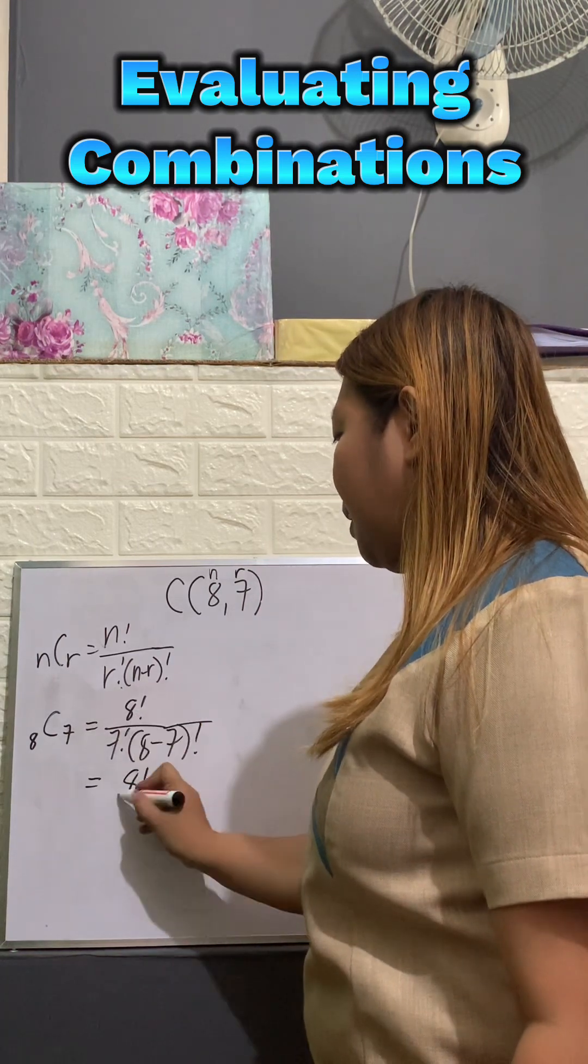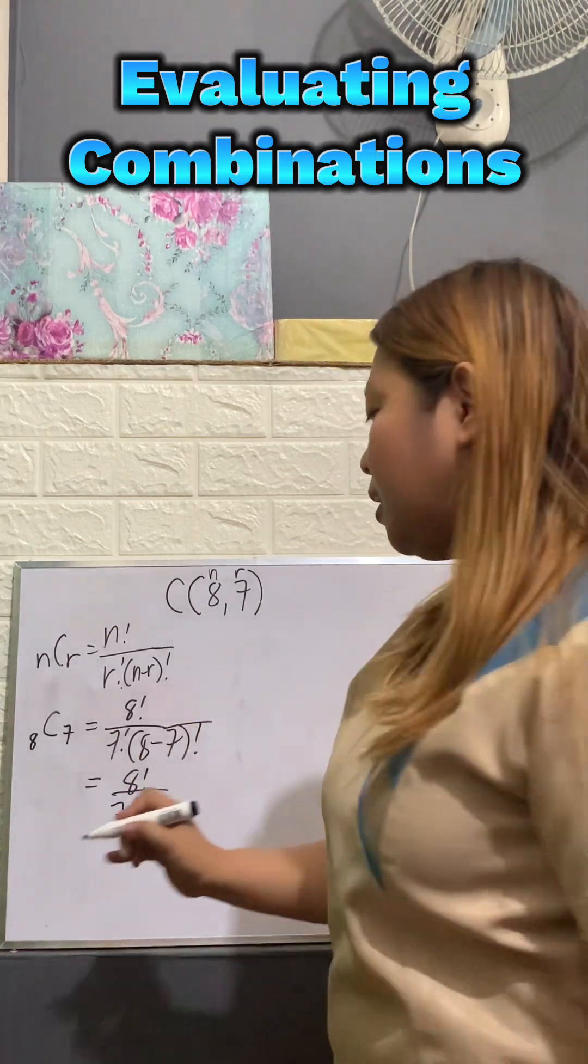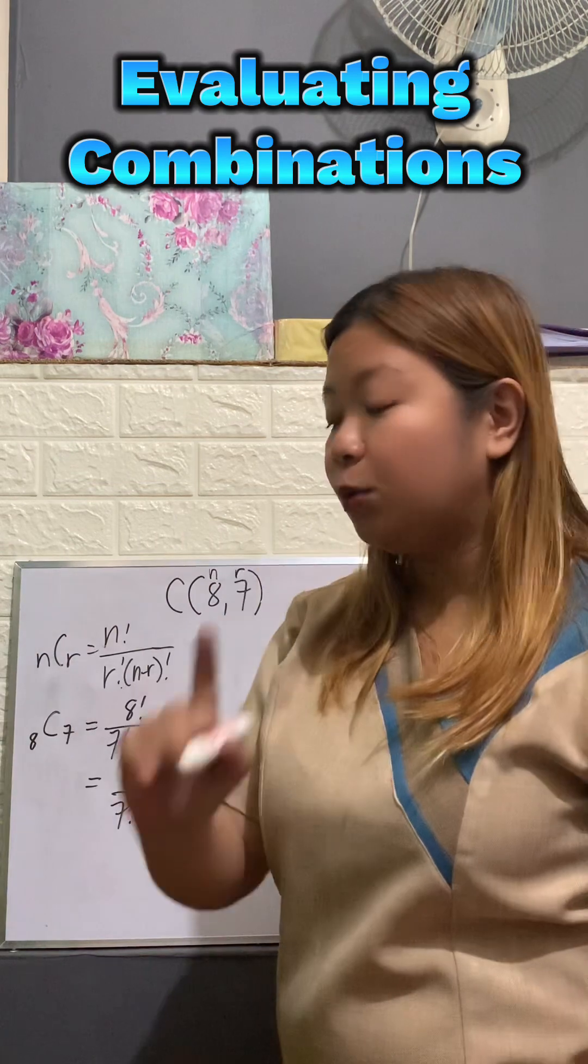So we have 8 factorial over 7 factorial. What is 8 minus 7? That is 1 factorial which is equal to 1.